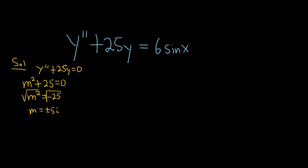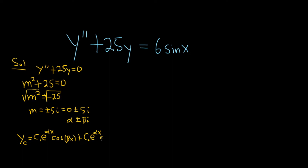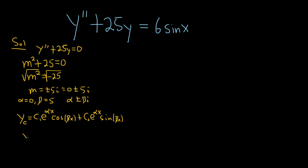So we have solutions that are complex conjugates. This is really 0 plus or minus 5i, and recall that whenever you have answers of the form alpha plus or minus beta i, the solution y_c is given by c1 e^(alpha x) cosine(beta x) plus c2 e^(alpha x) sine(beta x). In our problem alpha is zero, which is nice because e to the zero is one, and beta is five. So the complementary function is y_c = c1 cos(5x) + c2 sin(5x).